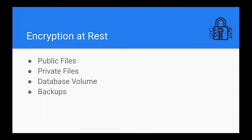Talking about all things encryption. First off the rank is encryption at rest — this is talking about stuff stored on disk. When a machine is imaged or someone gets access to the file system, you want to protect your data and make sure they can't just run off with your database volume, stuff in your private file system, or your backups.